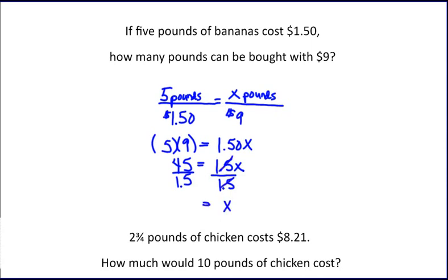That eliminates the 1.5 on the right-hand side, and I am left with the fact that I can buy 30 pounds with $9.